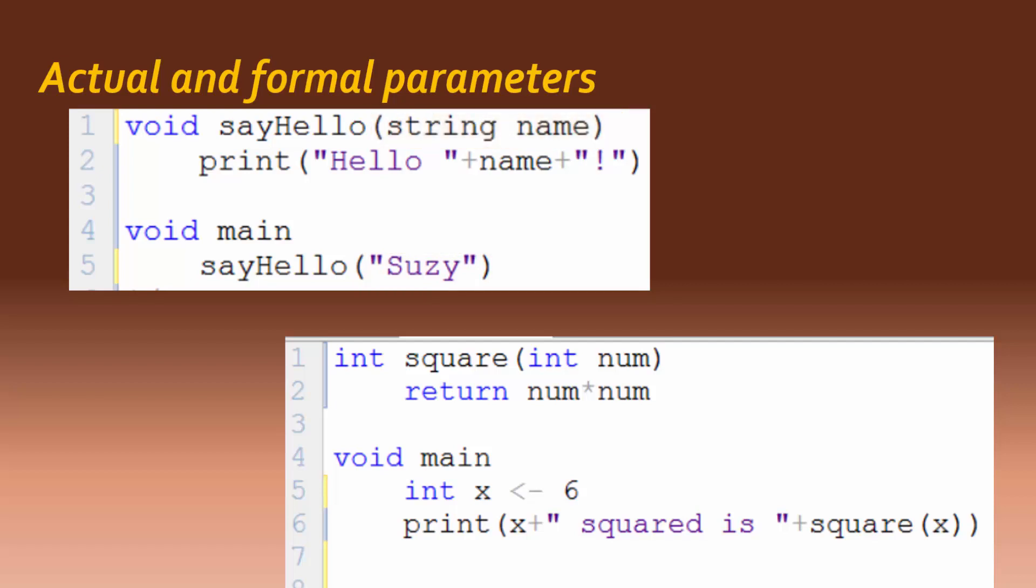For this second program, stop the video for a few seconds and think about it, and decide for yourself which is the actual parameter and which is the formal parameter. OK, if you decided that X is the actual parameter and num is the formal parameter, you are correct.